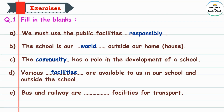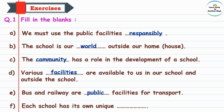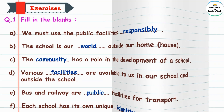Fill in the blank (e): Bus and railway are public facilities for transport. Fill in the blank (f): Each school has its own unique identity.